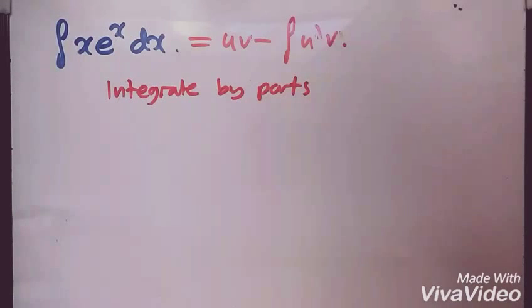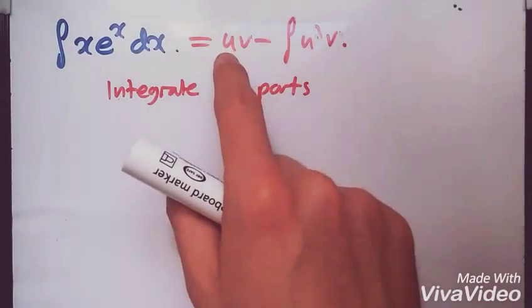We need to do this, and this is the best example of integration by parts. If you recall, the formula is u times v minus the integral of u prime times v, where we select a u and v prime.